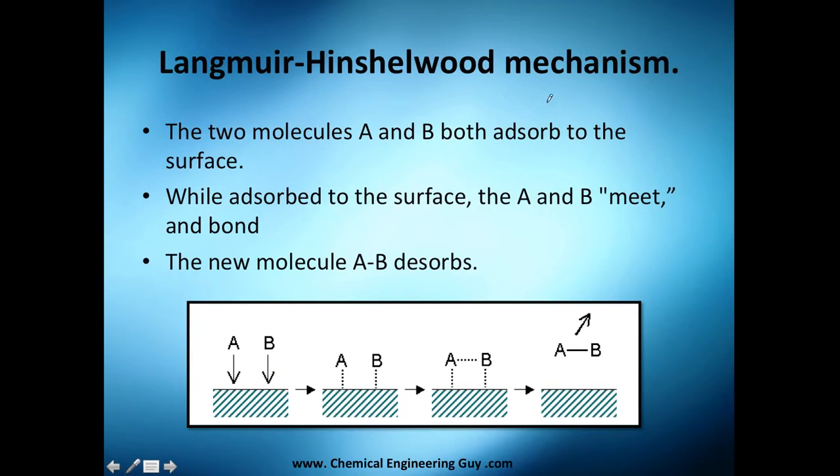The Langmuir-Hinshelwood mechanism is essentially two molecules, A and B, which are going to be our reactants, are both adsorbed in the catalyst bed. Then while adsorbed to the surface – let's say they are already adsorbed, this dotted line means they're adsorbed – they are going to meet each other and react or bond.